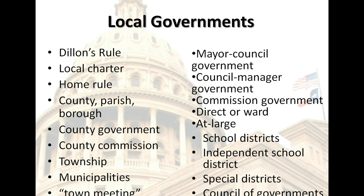Most city and school district governments are located in a county — called a parish in Louisiana and a borough in Alaska. County government is the administrative arm of state government in a local area. County governments keep records of birth, death, and marriage, establish a system of justice and law enforcement, maintain roads and bridges, collect taxes, conduct voter registration and elections, and provide for public welfare and education. County governments usually consist of an elected county commissioner that makes policy and a collection of row officers such as sheriff, prosecutor, county clerk, and assessor. Some urban counties now elect a county executive or appoint a county administrator.